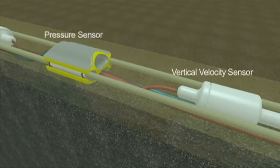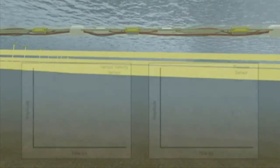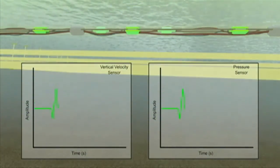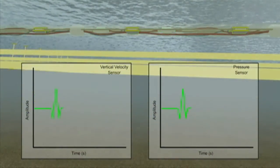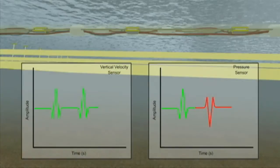The subsurface reflections are recorded by both the velocity and the pressure sensors. The upcoming wave is the reflected signal we wish to record, but when the signal hits the surface, we get a down-going reflected ghost wave which is recorded with opposite polarity by the pressure sensor.